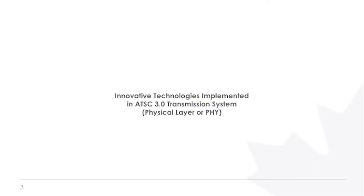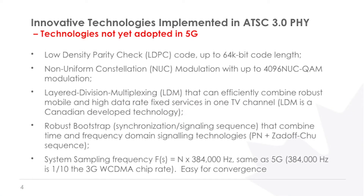What are the innovative technologies implemented in the 3.0 transmission system? I can list five. The first one is the LDPC code — it's up to 64K length. For the 5G system, they're less than 20K, so we are longer, and the performance is better.